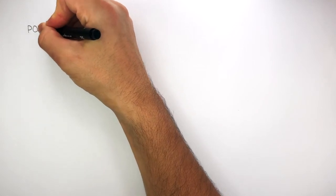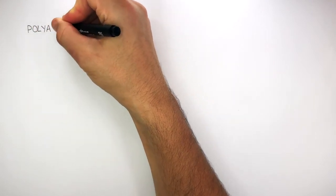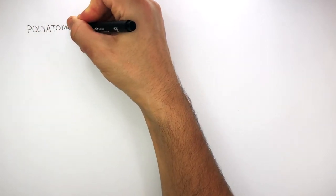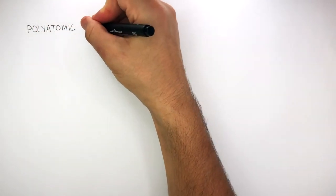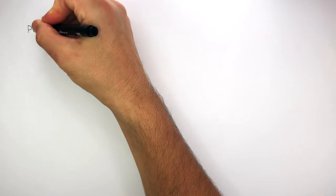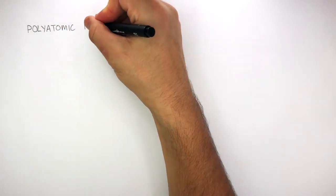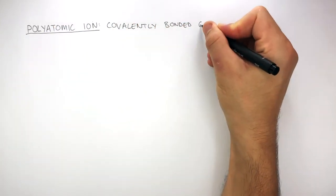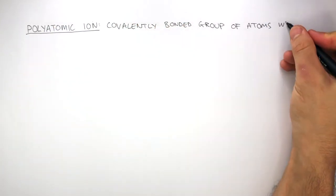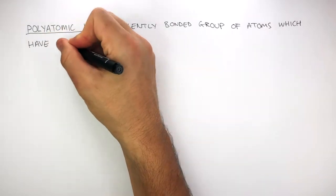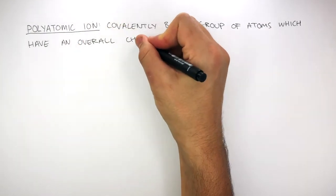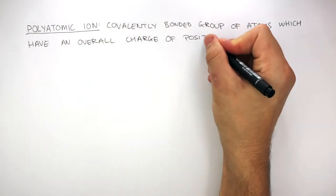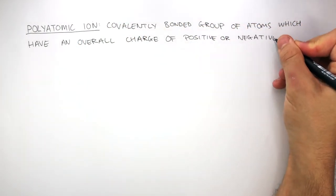Writing formulae of polyatomic ions by kscience.com. A polyatomic ion is a covalently bonded group of atoms which have an overall charge of positive or negative.